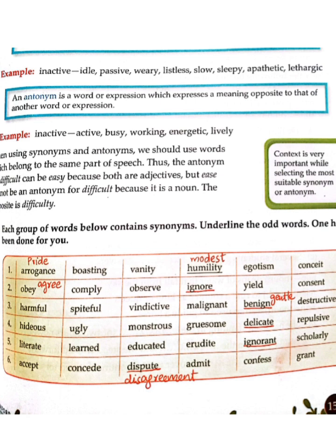Here is the first one. There are six words, and these are all synonyms, but one is different — the odd word. For example: arrogance, boasting, vanity, egotism, and conceit are all related to pride. But humility is different, so humility is the odd word — you underline it.